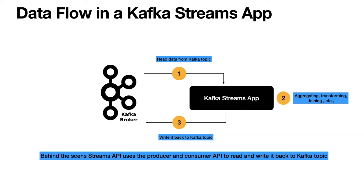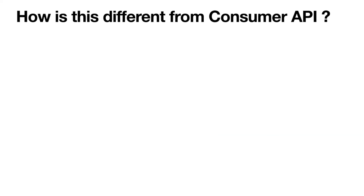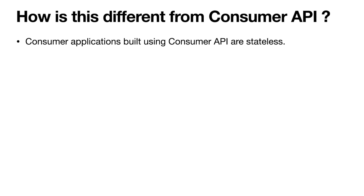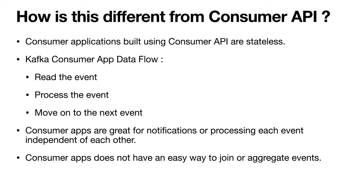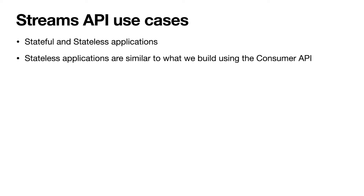Now you might have the question: how is this different from the Consumer API? The Consumer API starts the whole flow by reading the data from the Kafka topic, but the applications built using Consumer API are stateless. In the consumer app, we basically read an event, process the data, and then move on to the next event. Consumer apps are great for notifications or processing each event independently, but they do not have an easy way to join or aggregate events. This is where the Streams API shines — it has the capability to build both stateful and stateless applications. The stateless application using Streams API is similar to one built using the Kafka Consumer API, but the key difference is that Streams API uses functional programming style.